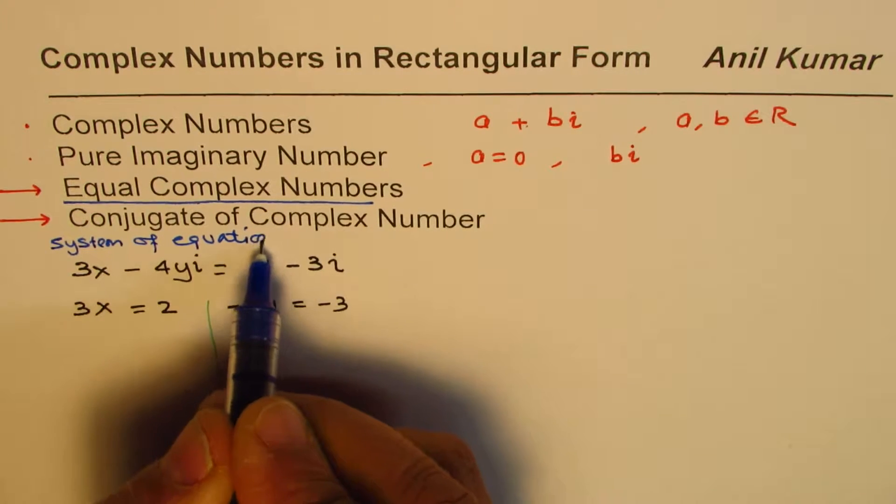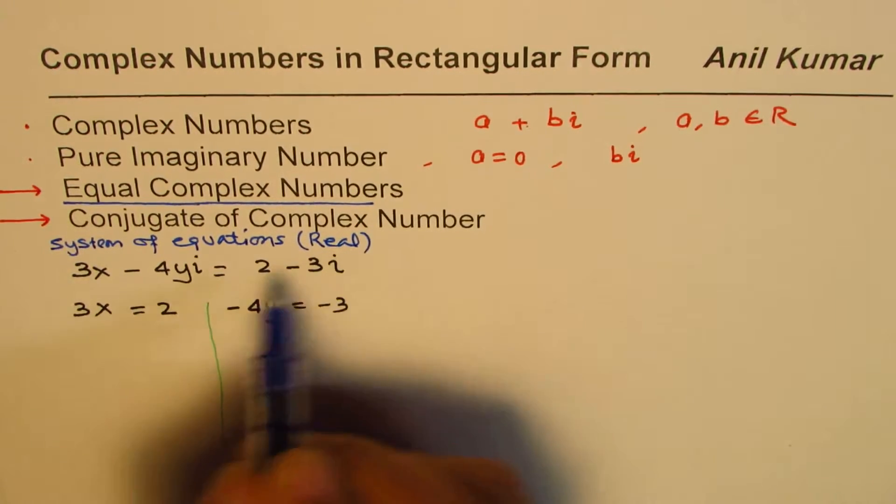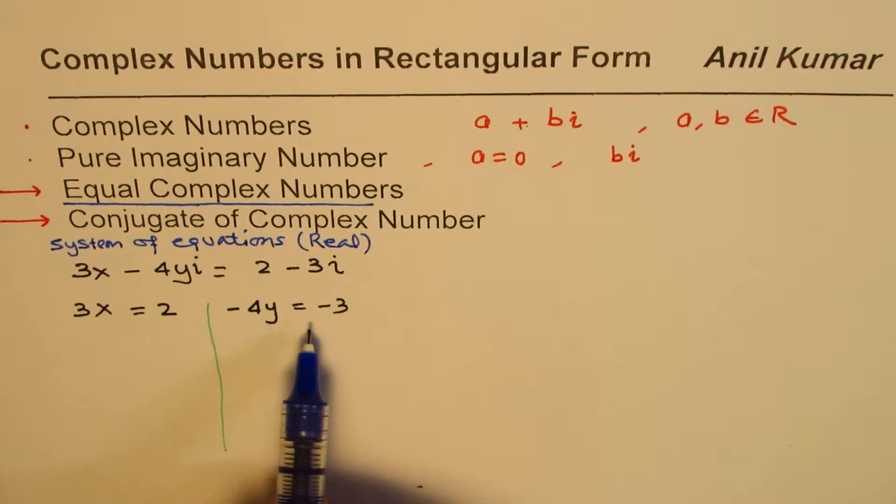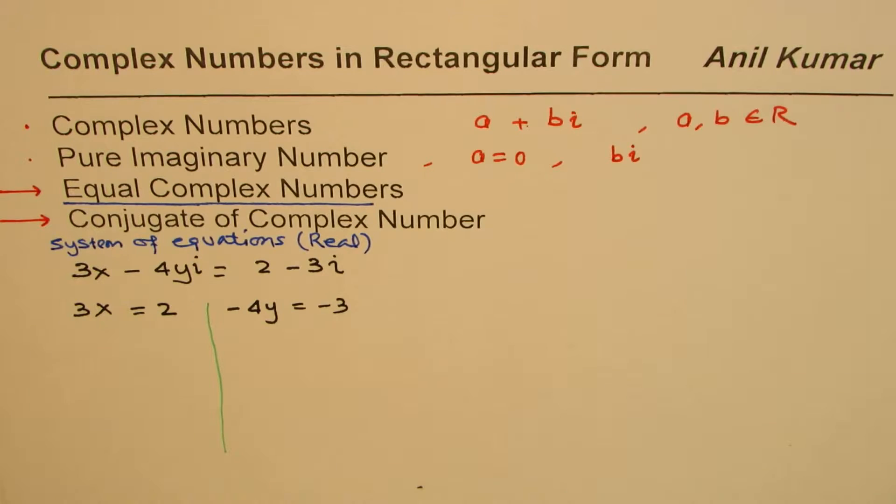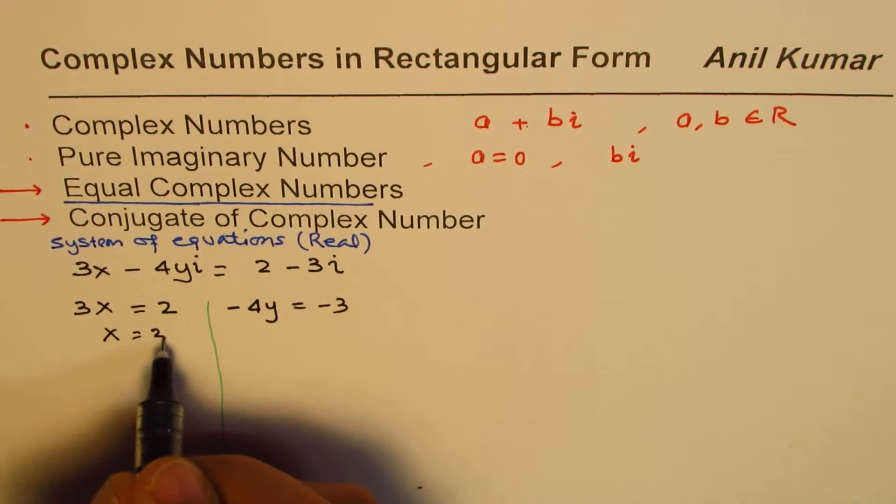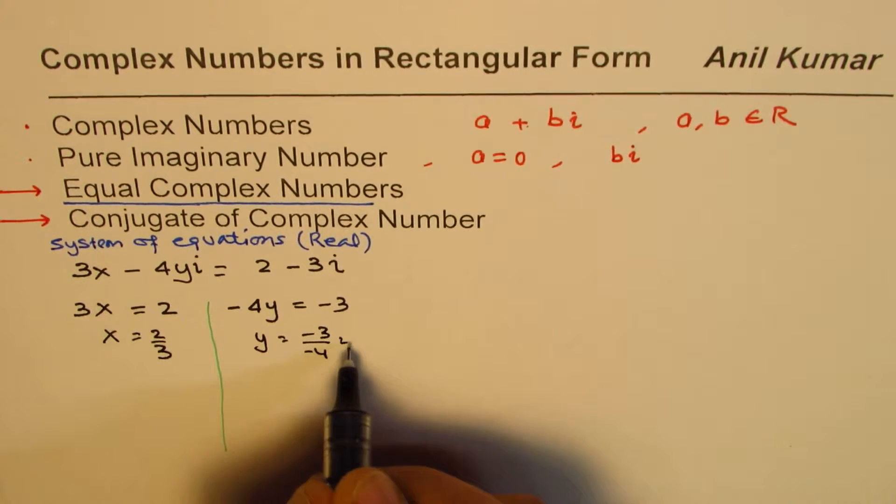These equations will be with real numbers. Here 3x equals 2, minus 4y equals minus 3 are the two equations. We can find the value of x as 2 over 3, and the value of y equals minus 3 over minus 4, which is 3 over 4.